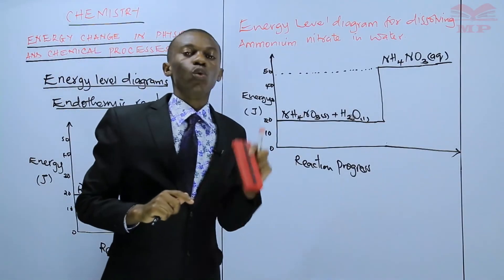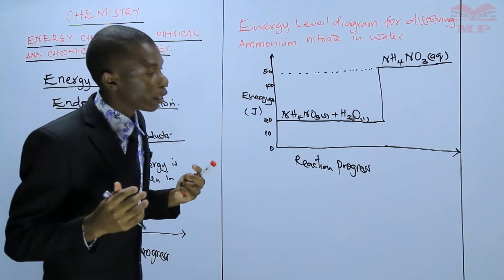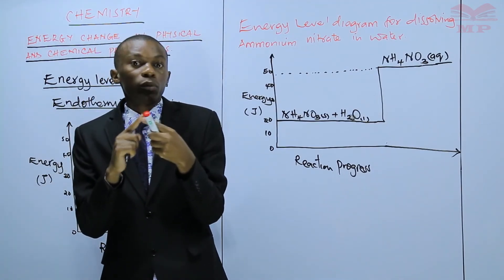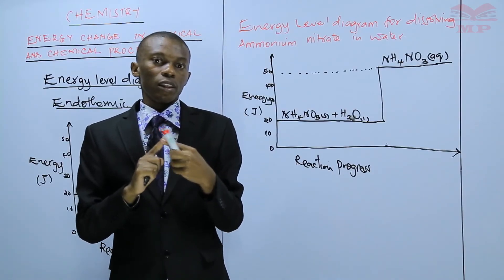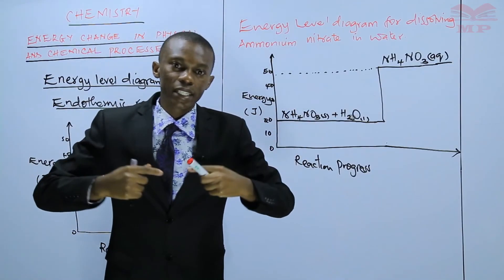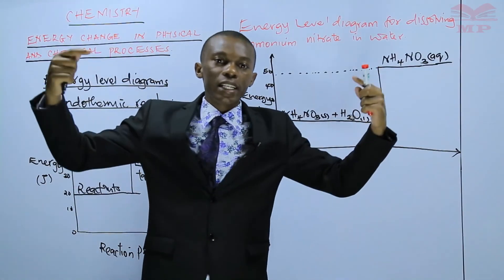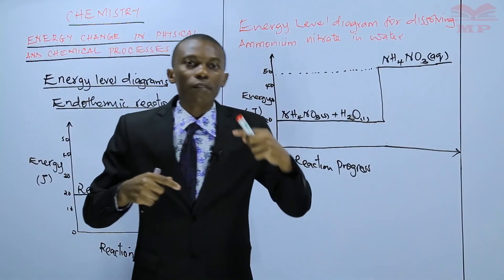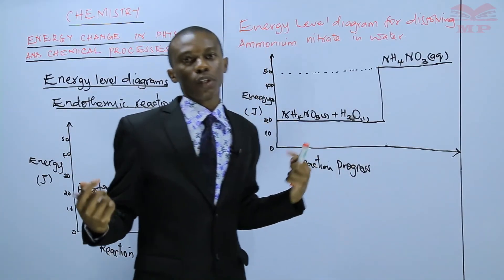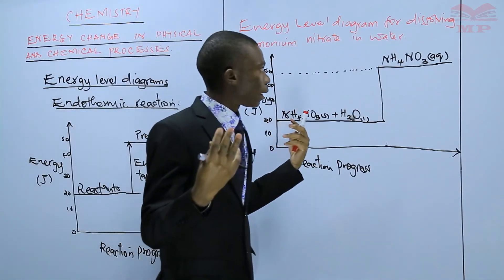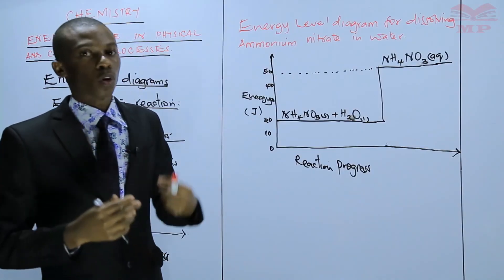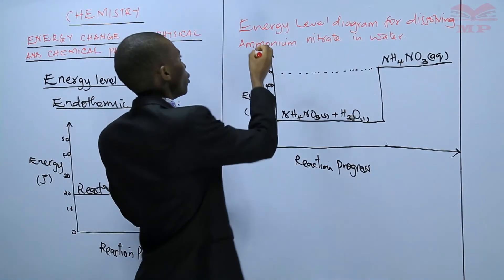In an endothermic reaction, there is always a gain of energy from the surrounding. In the experiment, we expected that when we measured the temperature of water, the temperature of water is supposed to be higher than the temperature of the solution, meaning that energy has been gained in the form of heat from the surrounding. This shows that the products will have a higher energy compared to the reactants. That is our energy level diagram to show how ammonium nitrate dissolves in water.